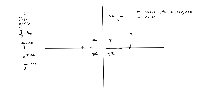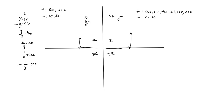In quadrant two, all points have a negative x value and a positive y value. Anything that has strictly y in it will be positive. So sine is positive because it is y, and cosecant — the reciprocal of sine — is also positive. All the rest have an x value in them and x is negative, so cosine, its reciprocal secant, tan, and cotan are all negative in quadrant two.